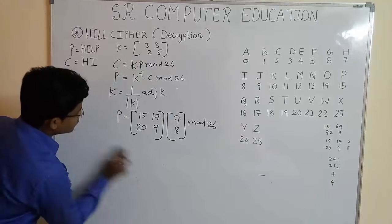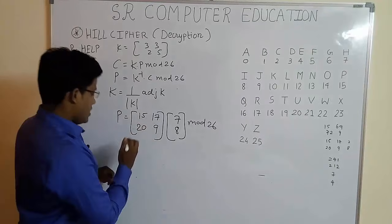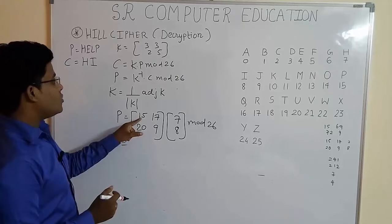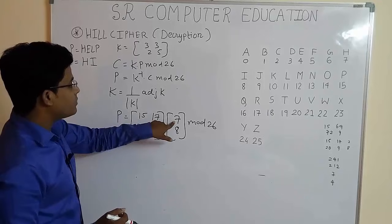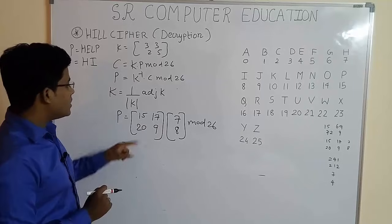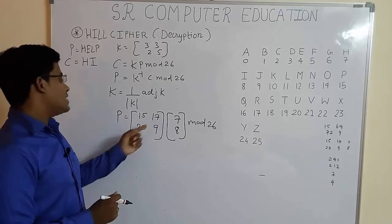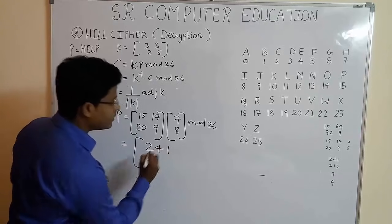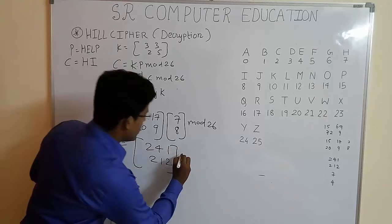Now as we were solving in encryption part, multiply these two matrices and get the answer and do the mod operation for each element. So when you multiply this, 15 multiply by 7 plus 17 multiply by 8, that is your first element. 20 multiply by 7 plus 9 multiply by 8, that is your second element. So after multiplying we get [241; 212] modulo 26.